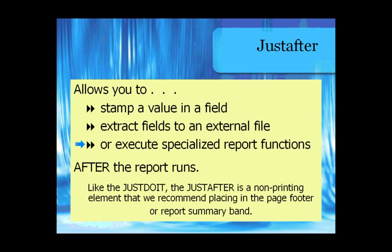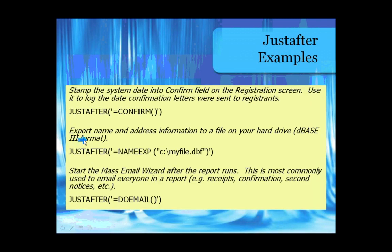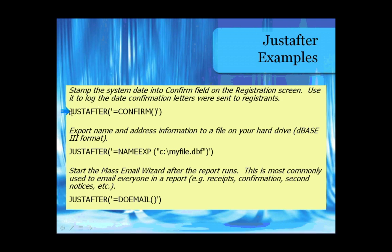Here are a couple of examples. Just-after Confirm uses the confirm function to log a confirmation date into the RG confirm field. Name EXP is a function that lets you export name and address data. Name EXP with 'do email' will launch the email wizard after the report. Normally you're going to call a function with the just-after.